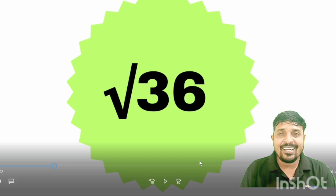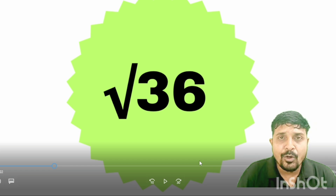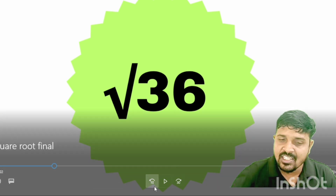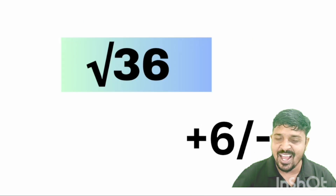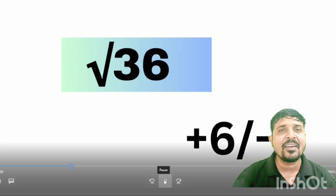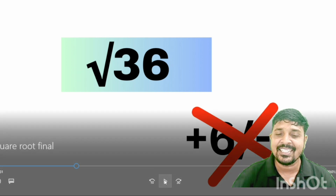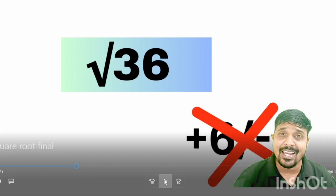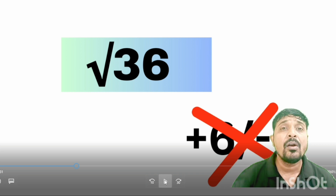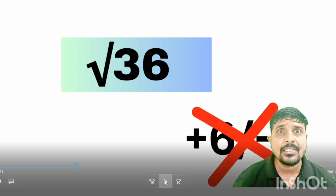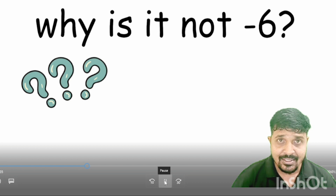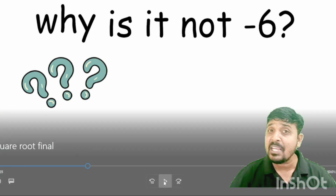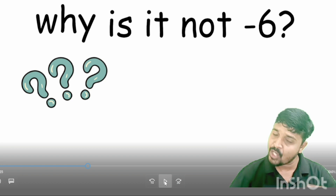Let's understand by taking root 36 as an example. The question is: what is the value of root over 36? You are giving the answer as either plus 6 or minus 6. But remember, if you are giving the answer as plus or minus 6, then you are absolutely wrong. You heard me clearly — you are absolutely wrong, because the answer is only plus 6 and it is not at all minus 6.